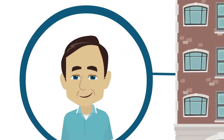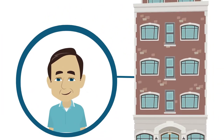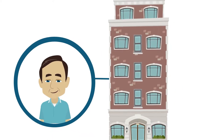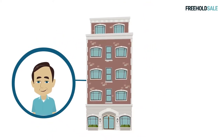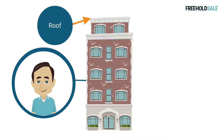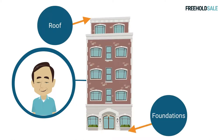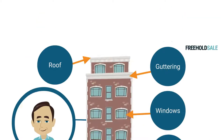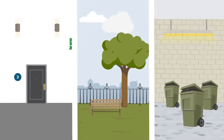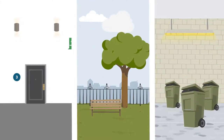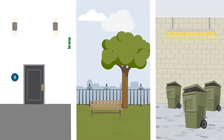A freeholder will typically be obligated to arrange and oversee repairs and maintenance to the structure of the building — for example, the roof, foundations, cladding, and windows. They are also typically responsible for maintaining communal areas such as hallways, gardens, and bin stores, or any area that is not solely used by a single leaseholder.